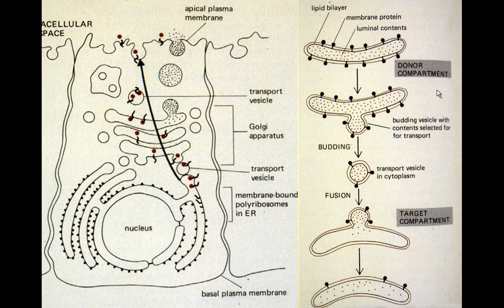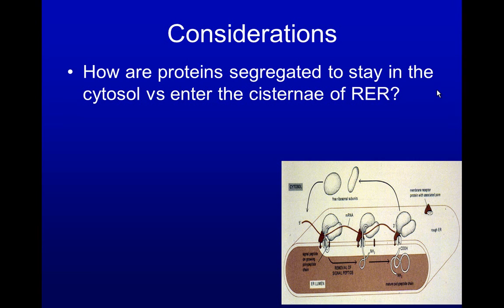Here we can see again where proteins in the endoplasmic reticulum go through the Golgi apparatus and are ultimately dumped out on the cell surface. Following a marker, you can see it remains on the inside all the way through the vesicles until the very end, when it ends up on the outside. What was on the inside becomes outside as the vesicle fuses with the plasma membrane to discharge its contents.